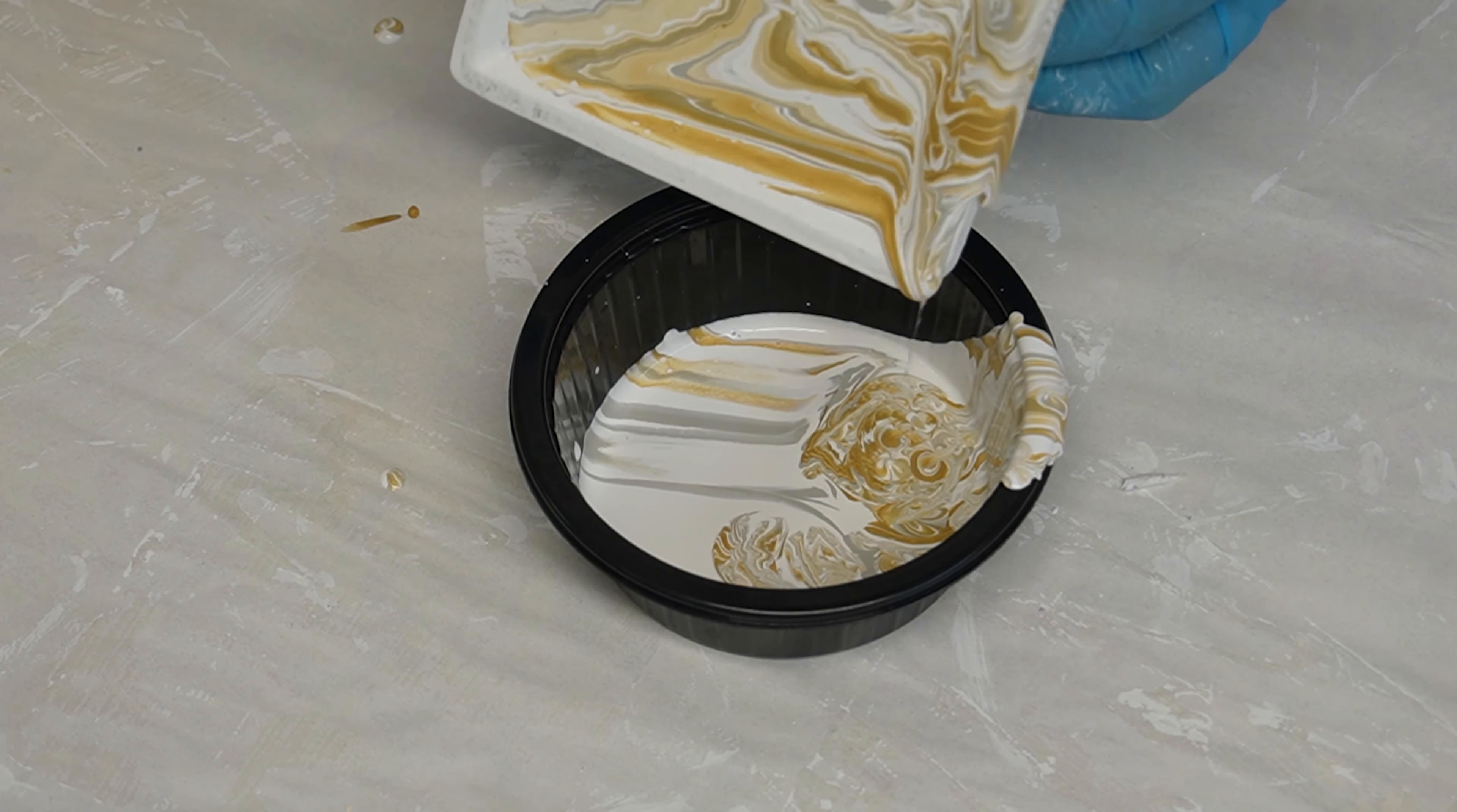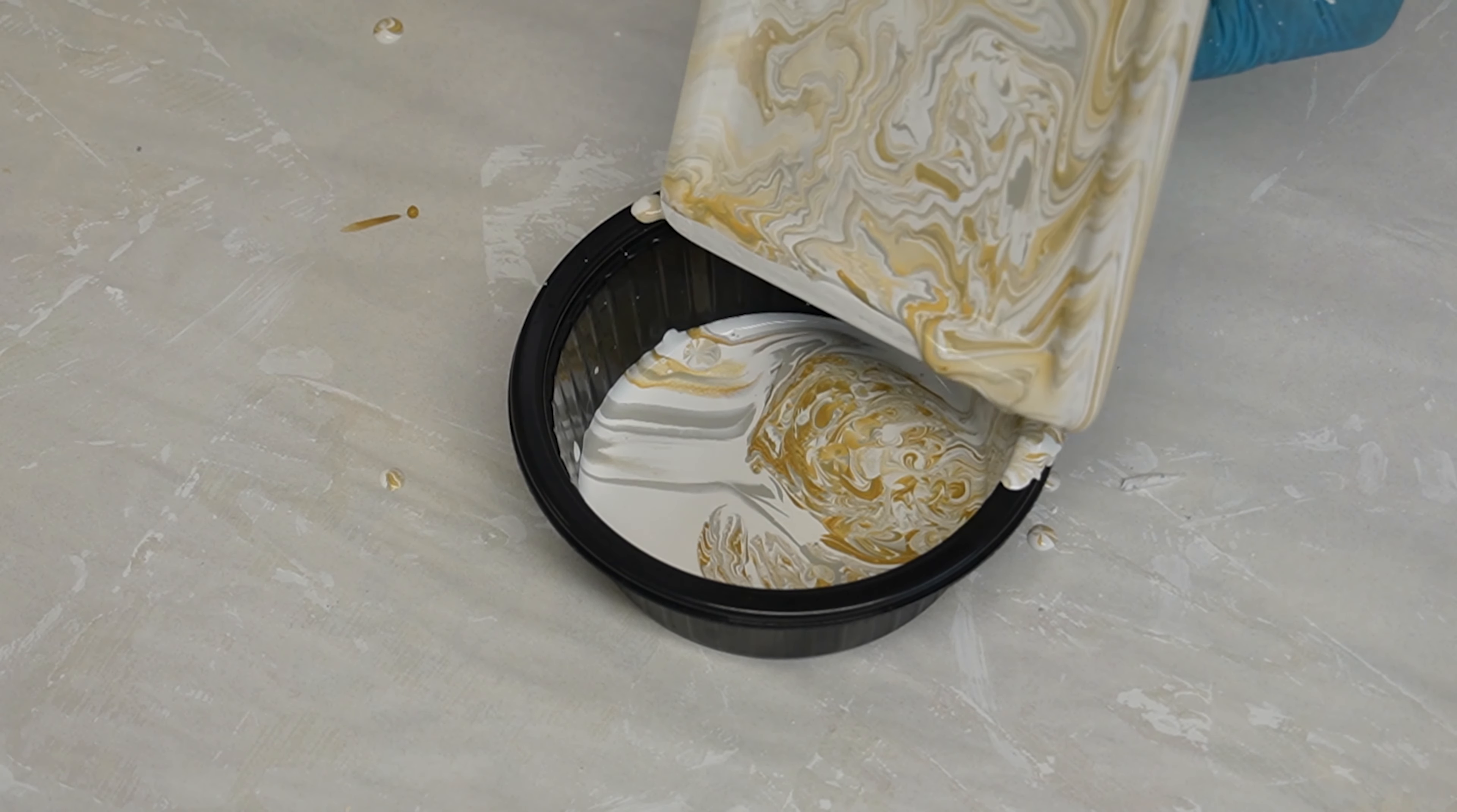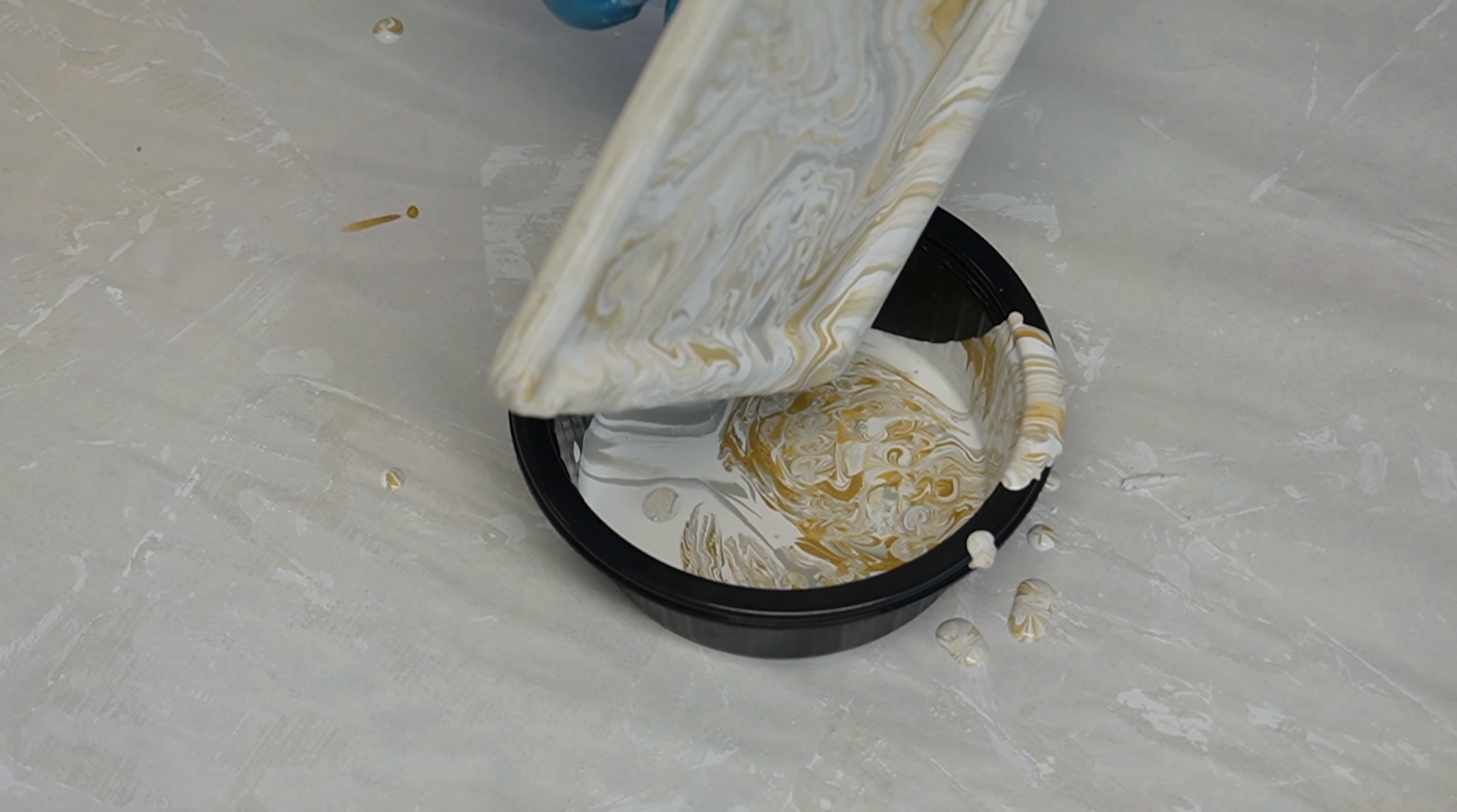Check out how the design changes and moves as you move your project. So you pour it on, then you move it from left to right and just let that paint glide over your project and do its thing. You can control it to a very small extent because the paint is going to make its own design. If you want the design to go more to the right or left on your project, you can certainly tilt your project in that direction.